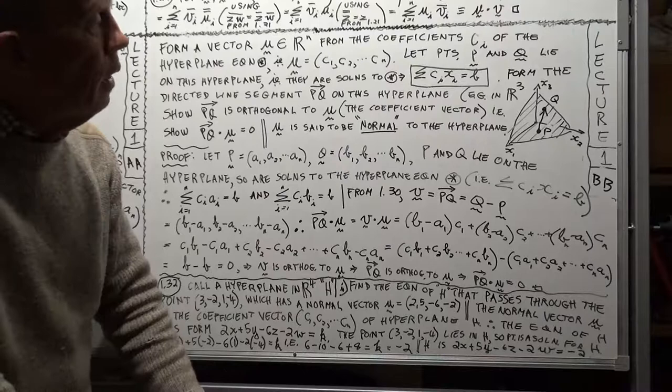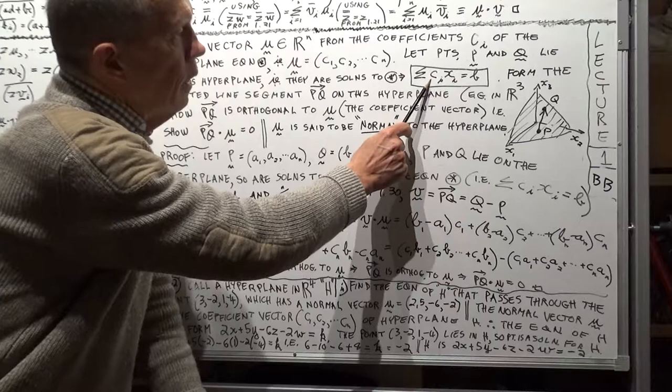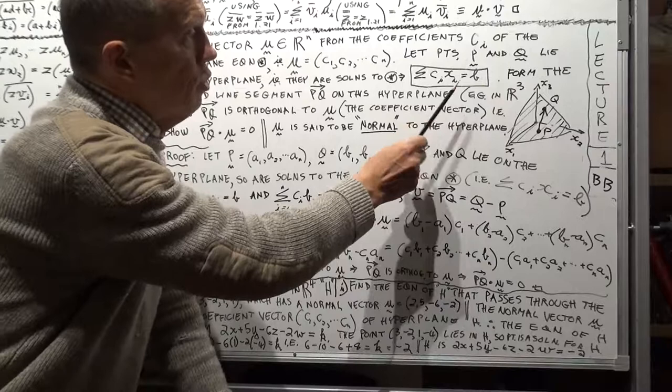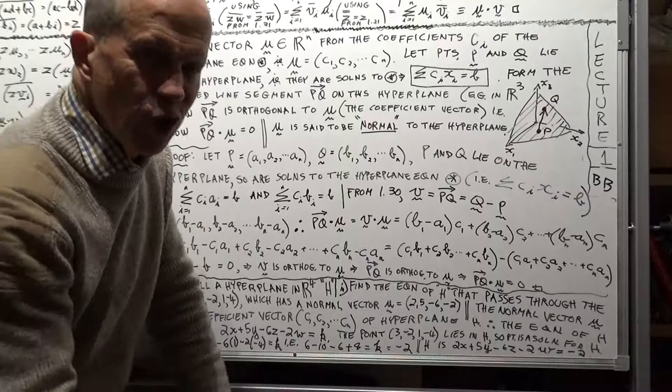All right, now we're going to take these coefficients here. Now, these x's, they're unknowns, they're variables, right? We're trying to find solutions for these x's. But these c's here, they're given, they're fixed, they're constants. That's why we call them c's, constant.